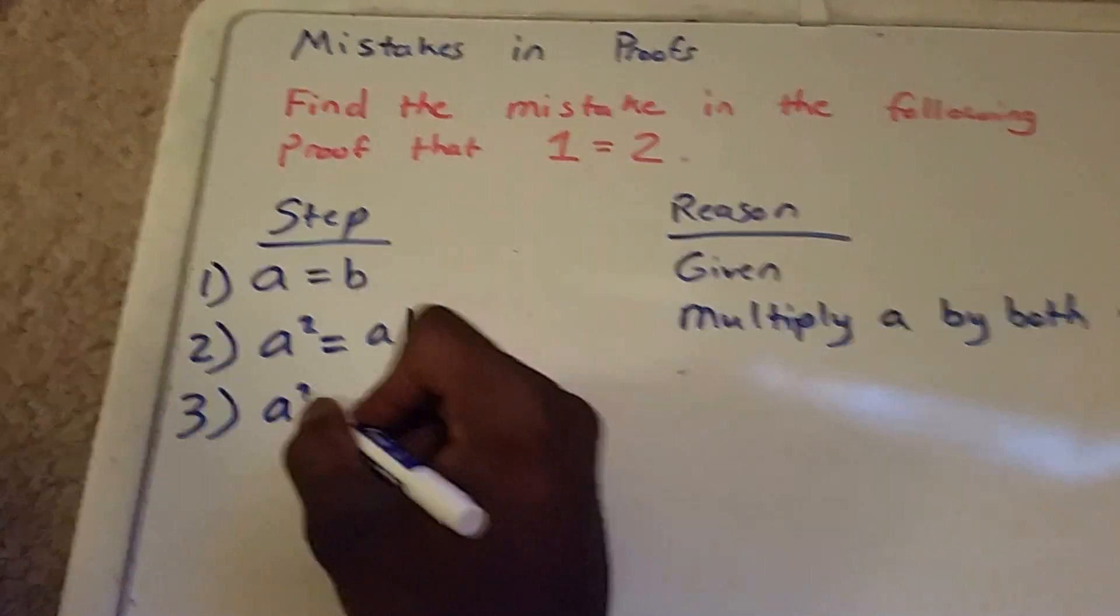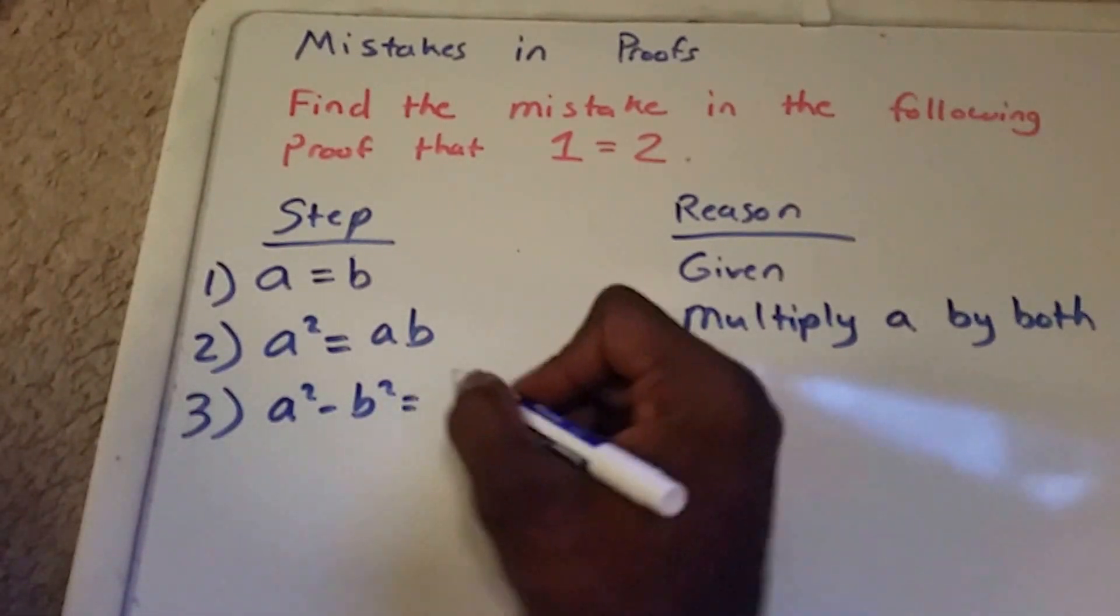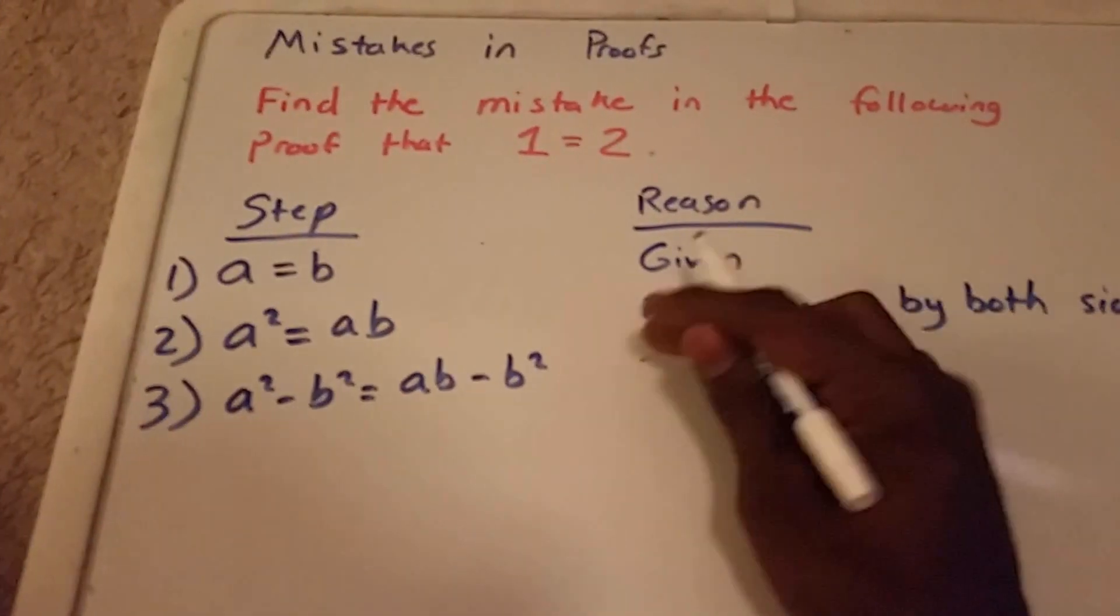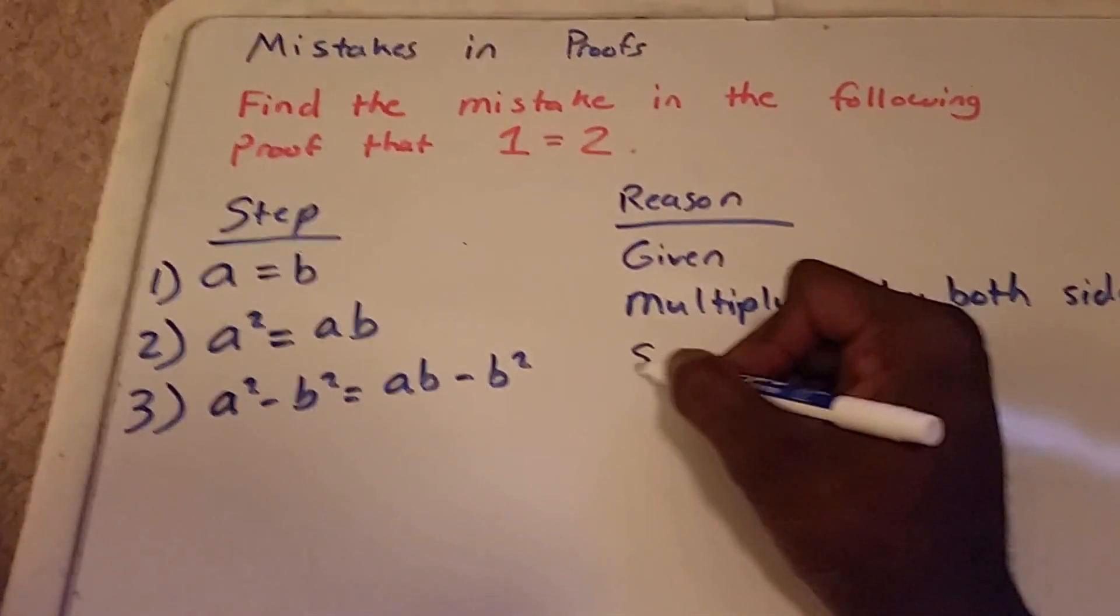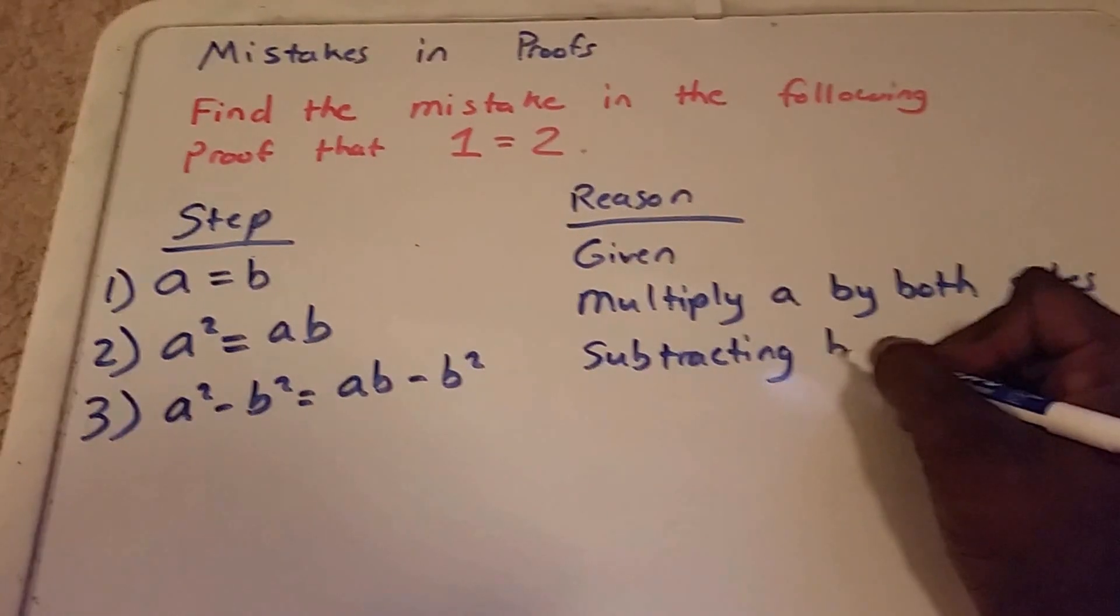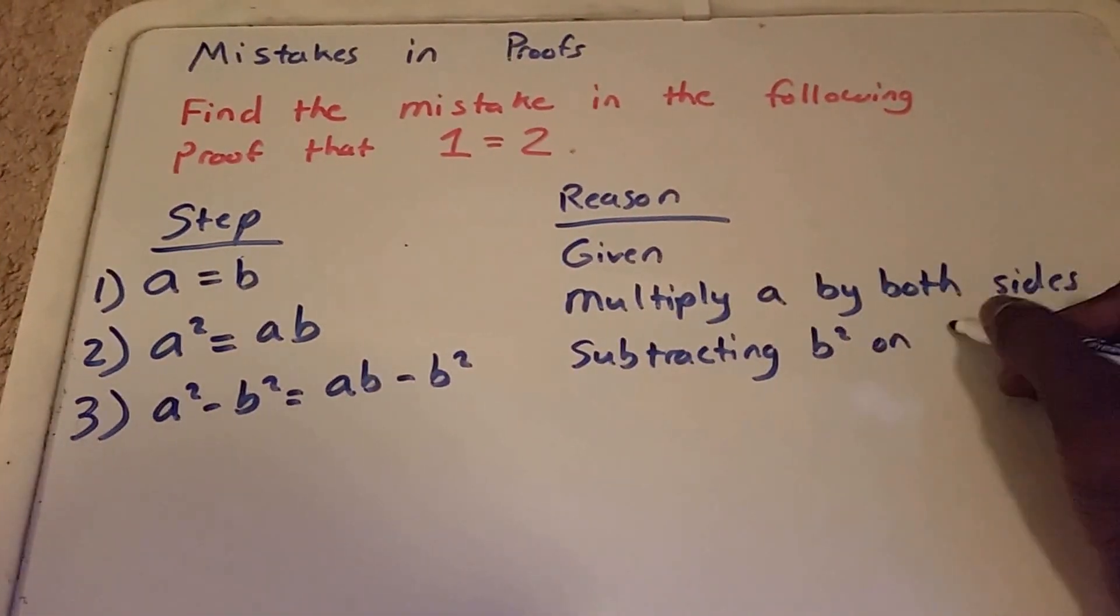We get a squared minus b squared equals ab minus b squared. And the reason behind this is because I'm subtracting b squared on both sides.